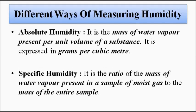There are different ways of measuring humidity. Absolute humidity is the mass of water vapor present per unit volume in a substance, expressed in grams per cubic meter — how much water vapor is present divided by the total volume of the substance. Specific humidity is the ratio between the mass of water vapor present in a sample of moist gas or substance divided by the mass of the entire sample.